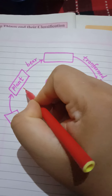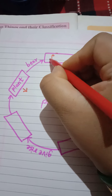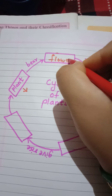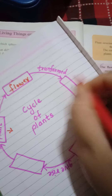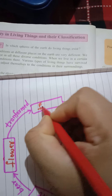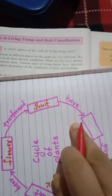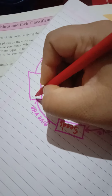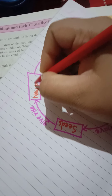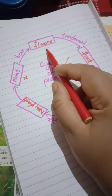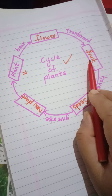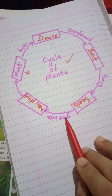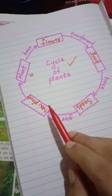A plant bears a flower; as time passes, this flower is transformed into fruit. The fruit has seeds, and these seeds give rise to a new plant. So this is the life cycle of plants: plants bear flowers, flowers are transformed into fruits, fruits have seeds, seeds give rise to new plants, and again the cycle goes on.